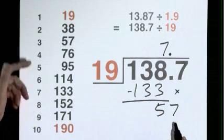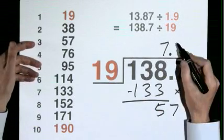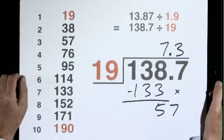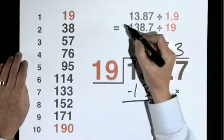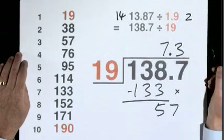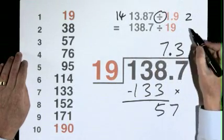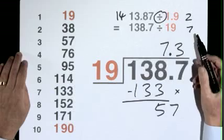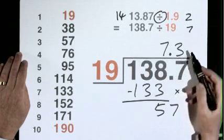19 into 57 goes 3. 7.3. 13.87 is nearly 14, 1.9 is nearly 2. 14 divided by 2 is 7, and a proxy answer is 7. 7.3 is exact.